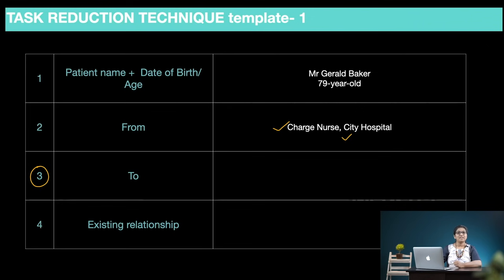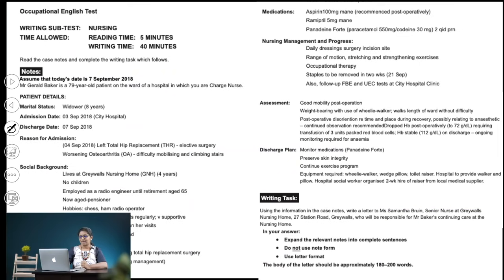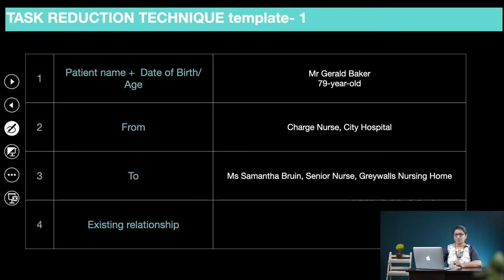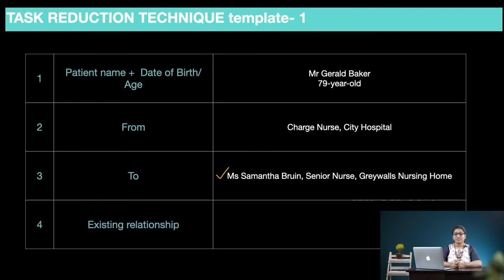Now we fill in the third point — who are we writing to, our reader. We refer to the case notes, look at the writing task, and it says: write a letter to Miss Samantha Broon, senior nurse, Graywall's nursing home. So under point three, we've written Miss Samantha Broon, senior nurse, Graywall's nursing home.